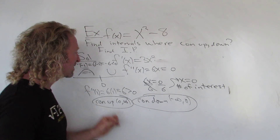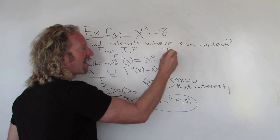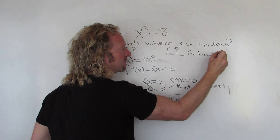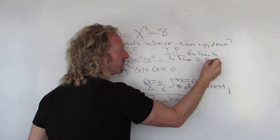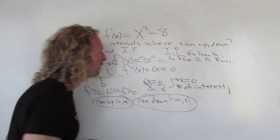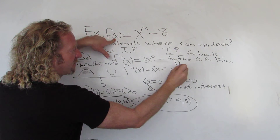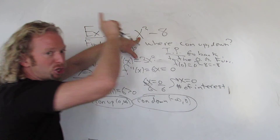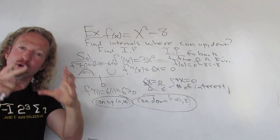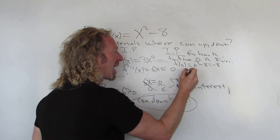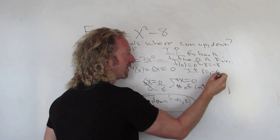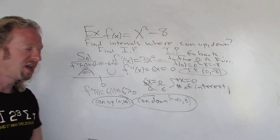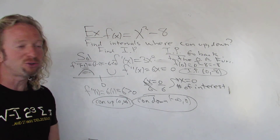The concavity changes from down to up at x = 0, which means at x = 0 we have an inflection point. To find the actual point, plug x = 0 back into the original function — the 'OG function.' So f(0) = 0³ − 8 = negative eight. The inflection point is the ordered pair (0, −8) — that's the point on the graph where the concavity changes. I hope this video has made sense. Thanks for visiting my YouTube channel.